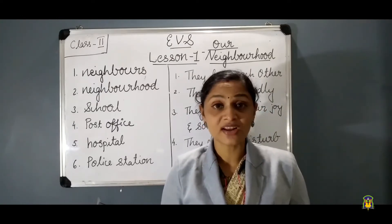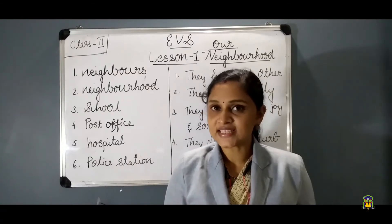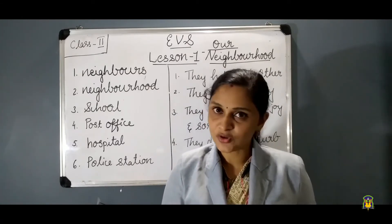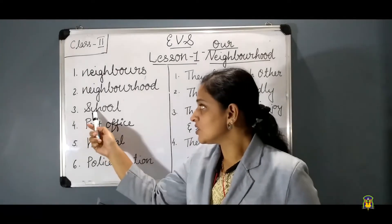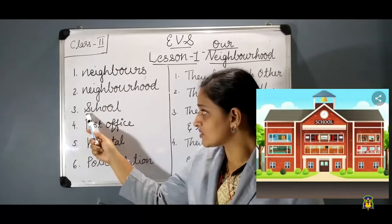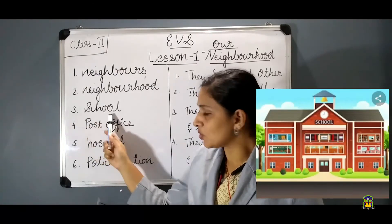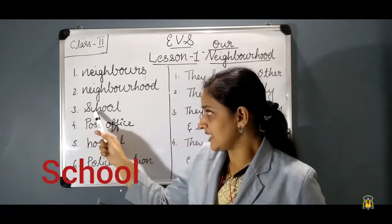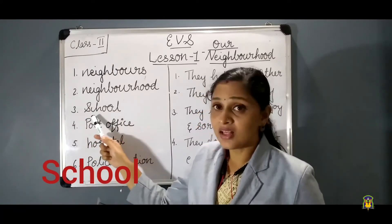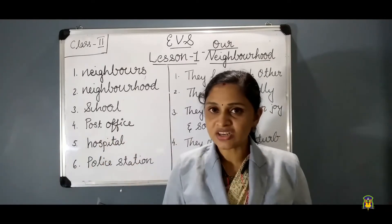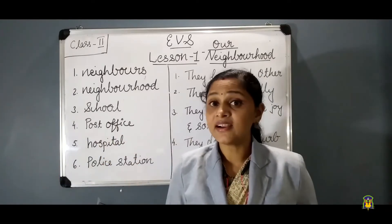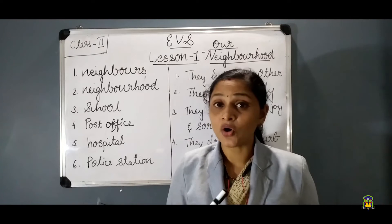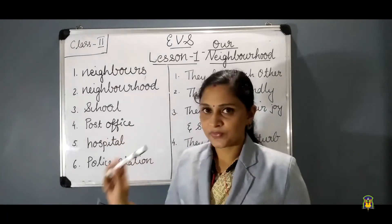Next, we are going to learn what services are available in a neighborhood. First one is school. The spelling of school is S-C-H-O-O-L. From the school, children learn how to read and write, and they get knowledge from the school.